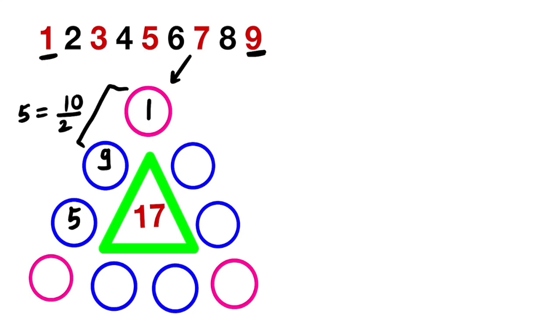We want the sum as 17. So here we have 1 plus 9 plus 5, that is 15. So 15 plus 2 is 17. We are done with this line. Now let us fill this line.